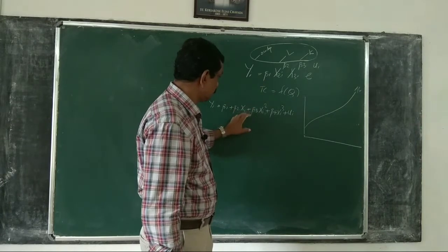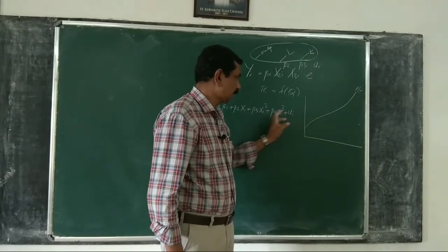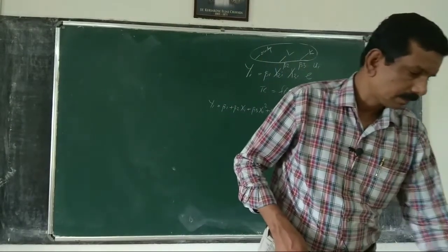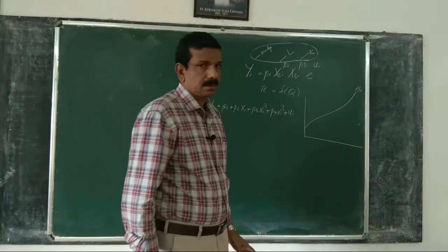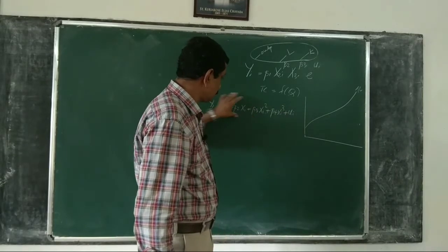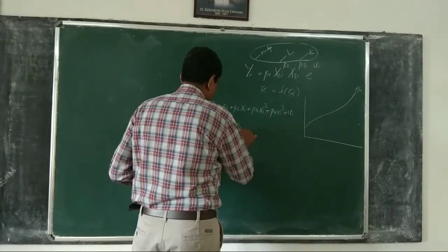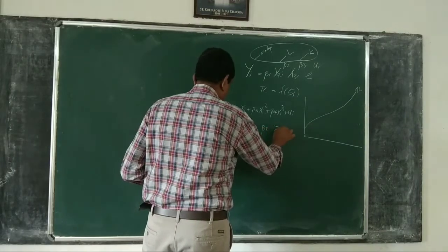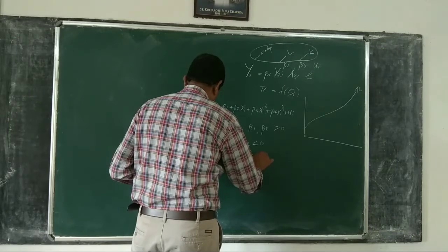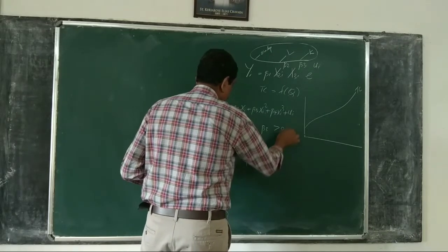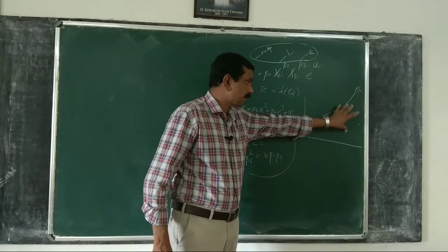A cubic function can have different shapes. The restrictions that must be placed on the coefficients to obtain the standard total cost shape are: beta1 > 0, beta3 > 0 (note: also beta4 > 0), beta2 < 0, and beta2^2 < 3*beta1*beta3. These restrictions on the coefficients ensure that the shape of the total cost curve has the standard microeconomic form.